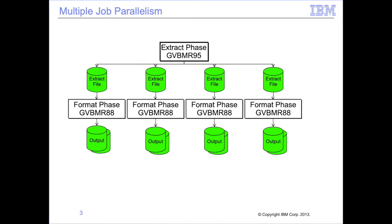In a prior module, we noted that the extract engine, GBBMR95, is a parallel processing engine. The format phase, GBBMR88, is not. It is possible to run multiple format phase jobs in parallel, one processing each extract file, yet each job is independent of each other — they share no resources, such as lookup tables for join processing. In this module, we will highlight the benefits of GBBMR95 multi-threaded parallelism, and how to enable, control, and debug it.